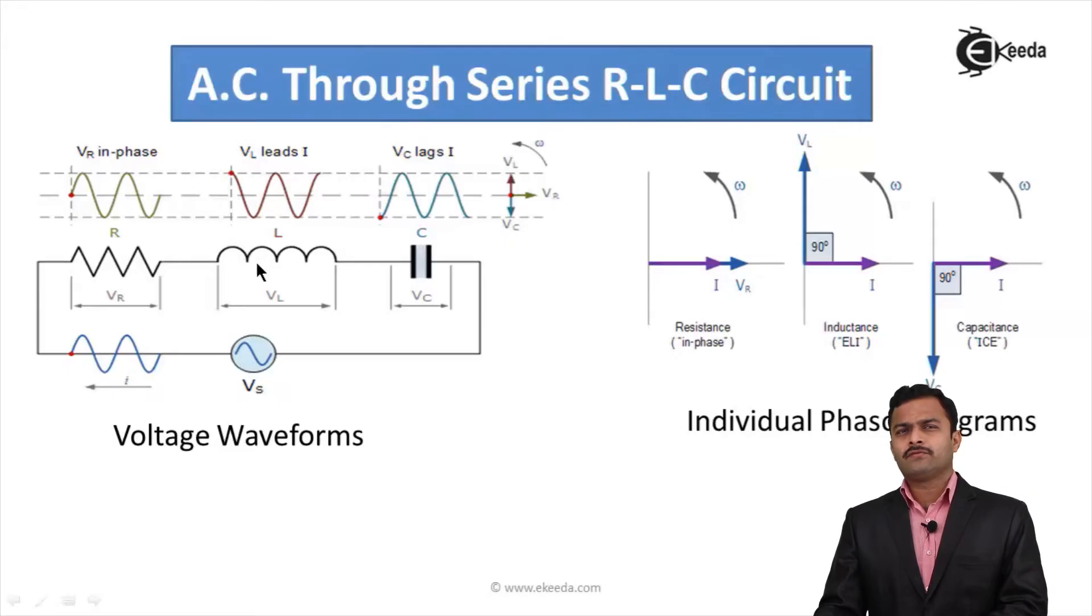For inductor, if current is a reference, voltage leads current by 90 degrees. This will be the nature of phasor diagram for voltage and current across inductor. For capacitor, if current is a reference, voltage lags current by 90 degrees for a pure capacitor.